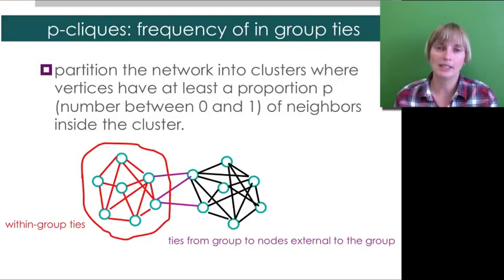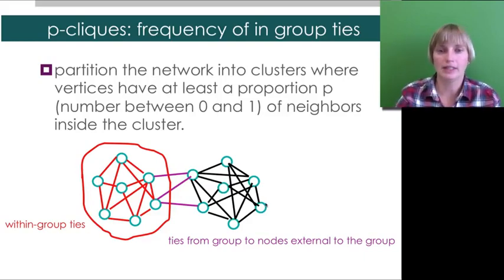The final definition we'll examine are p cliques. This is where, instead of saying you have to know k of the other individuals, you have to know at least the proportion p of the individuals within the cluster.